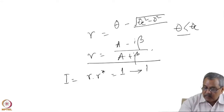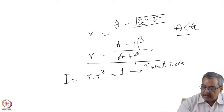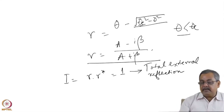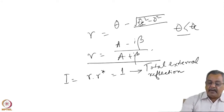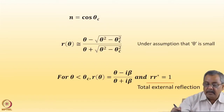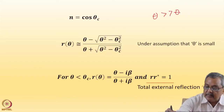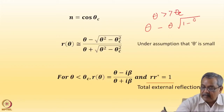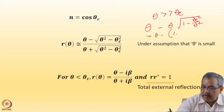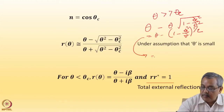The reflected intensity is r·r*, which equals 1. This signifies total external reflection from the interface. Because the critical angle θc is dictated by the density in the medium — i.e., by medium properties — up to the critical angle the reflected intensity is equal to 1. Then when θ is much greater than θc, the reflectivity begins to fall off.